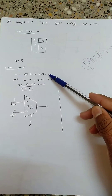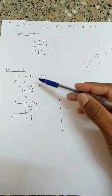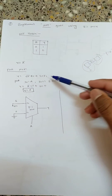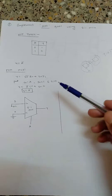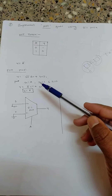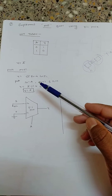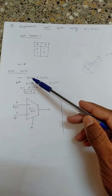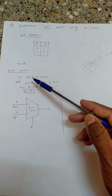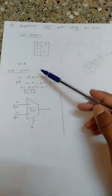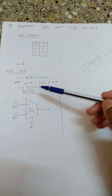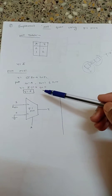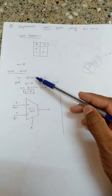For a 2-to-1 MUX, the output equation is: S-naught-bar times I-naught plus S-naught times I1. Now I have to do some substitution such that this equation is converted to the form y equal to A-bar.